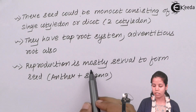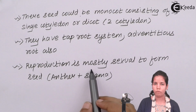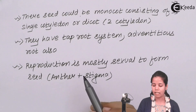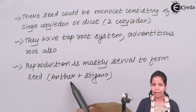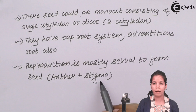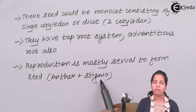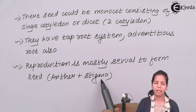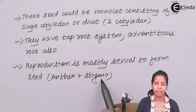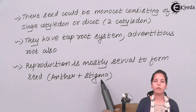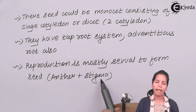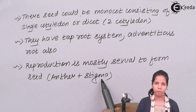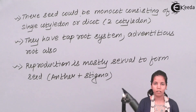Reproduction is mostly sexual — the male gamete anther and the female gamete stigma fertilize in favorable climatic conditions with the help of pollinating agents to produce the seed, and then the flower and then the fruit.